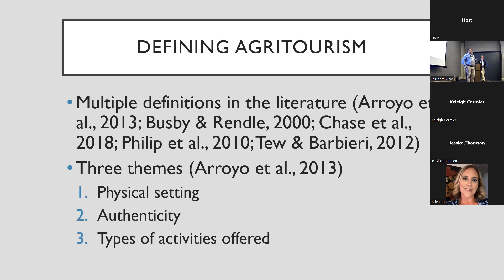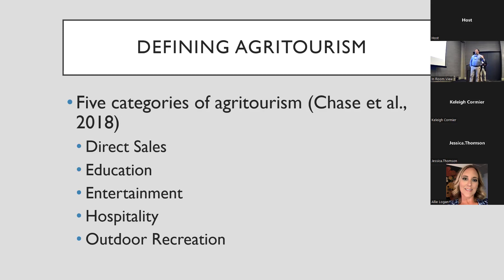Alabama is a very long and wide state, diverse in population and agriculture. North Alabama has traditional farming of corn, soybeans, and wheat; central Alabama transitions to pulp production, small wineries, and vegetable production; South Alabama has cotton, peanuts — about 90% grown in a 500-mile radius — and the Gulf Coast with shellfish production. The study used five categories defined by Chase: direct sales, education, entertainment, hospitality, and outdoor recreation.